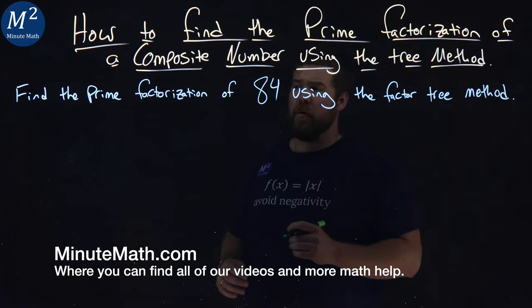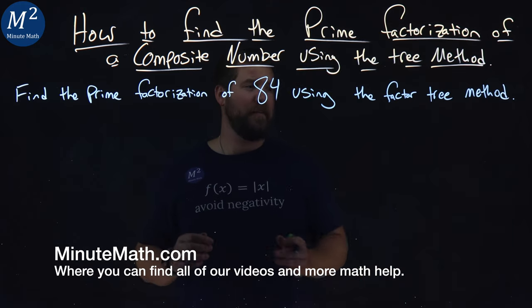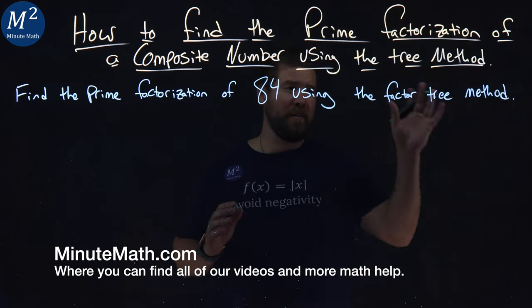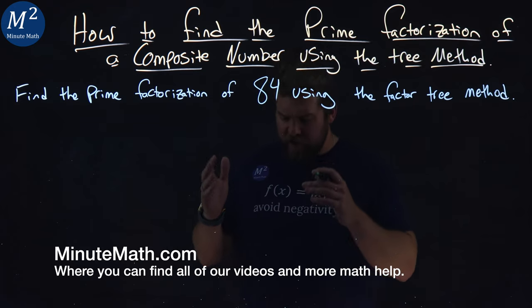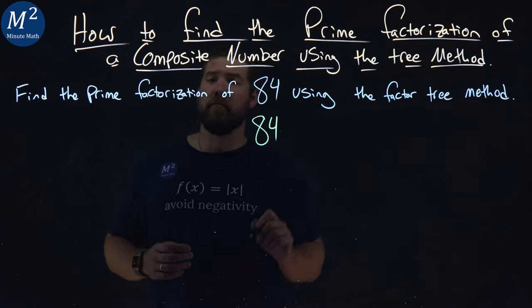We're given the number 84. We're going to find the prime factorization of it, and we're going to find it using the factor tree method. The factor tree method, well, we start with our number 84.